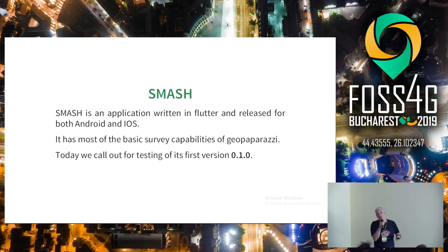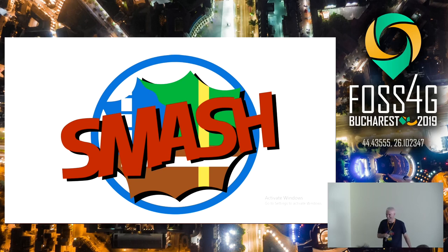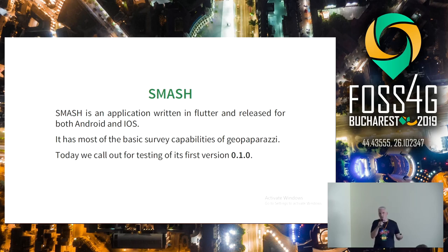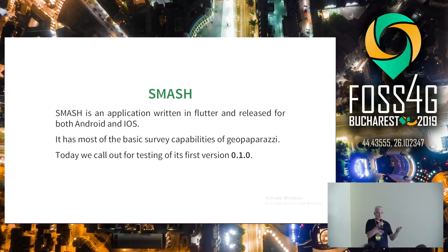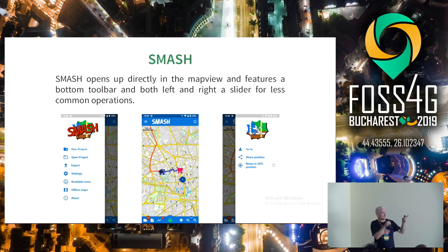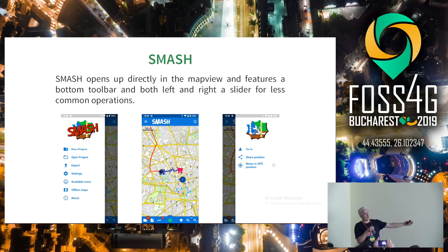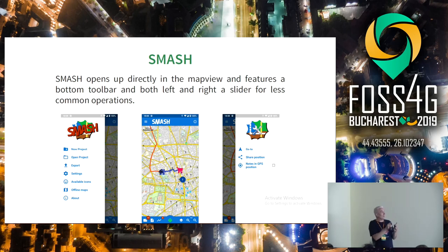SMASH is an application written in Flutter, which is a cross-platform framework by Google, and it's released for both iOS and Android. The first test we made was exactly a GeoPaparazzi-like version, and then we figured with Flutter you can do better stuff. So now you open up SMASH and you find yourself directly in the map view. You have a toolbar at the bottom where everything happens, and for the less common operations you have a slider on the left and on the right.